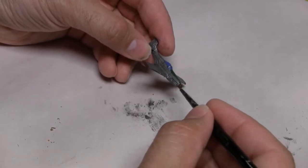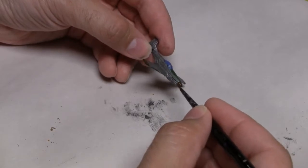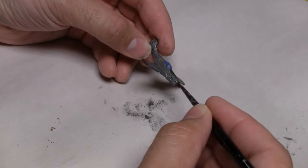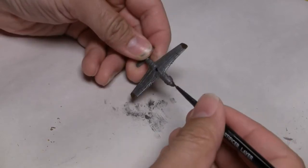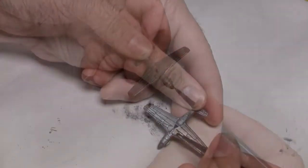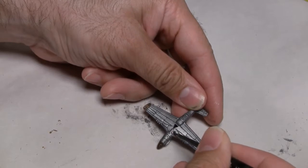For my undercoat, I'm going to be using Oak Brown from Army Painter's War Paint series. Now it's important to put this brown everywhere where the red markings are going to end up being. So you're essentially painting the red markings in brown first.